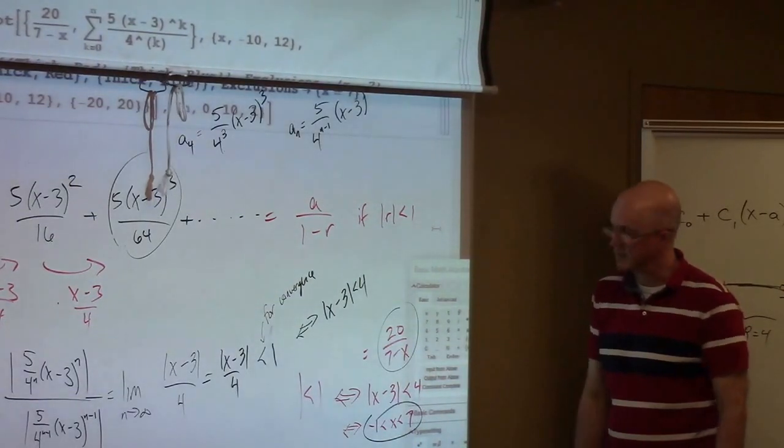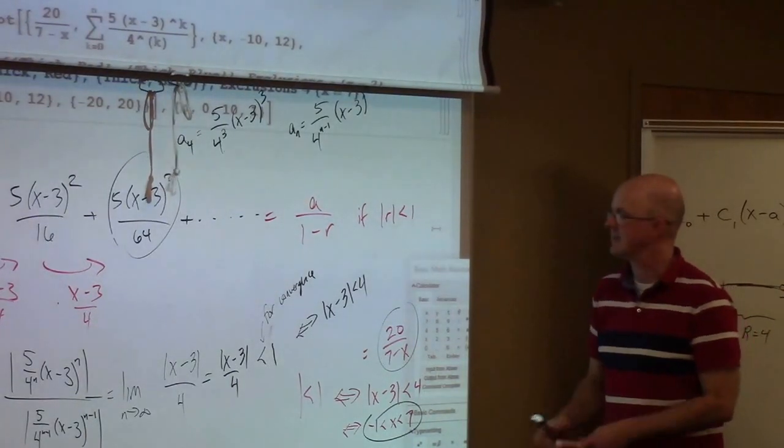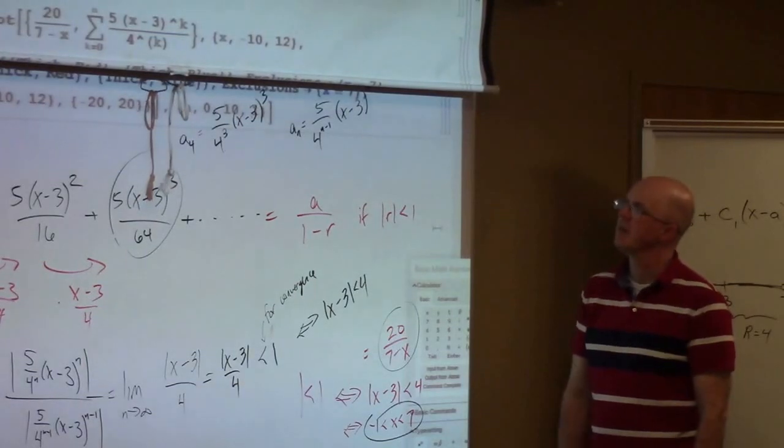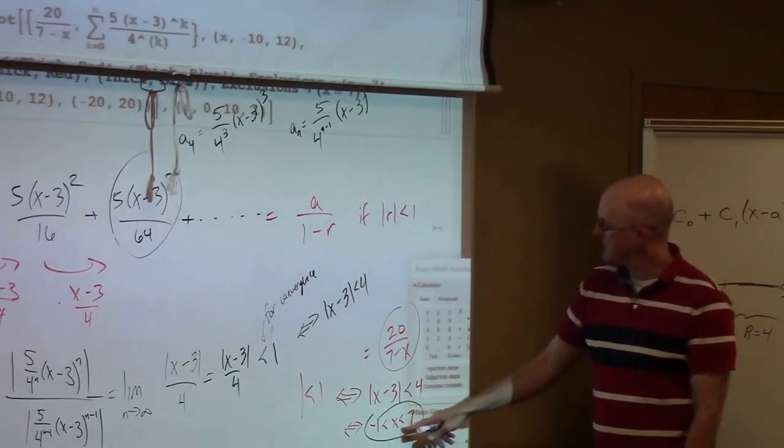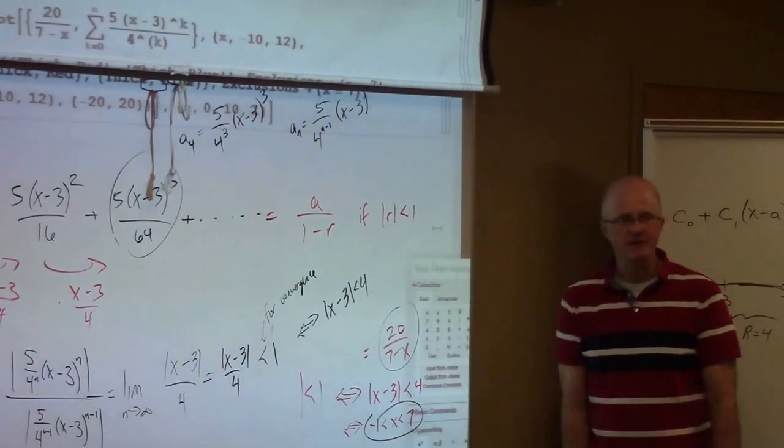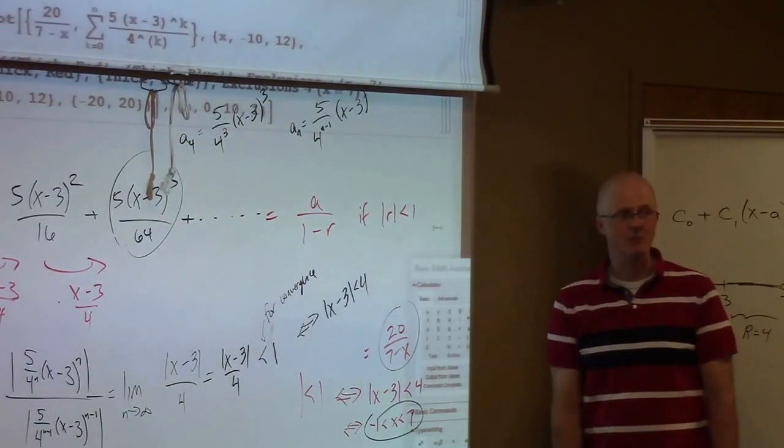That's a function of x, and so we can make a graph, and we saw graphically that these things do match up exactly when x is strictly between negative 1 and 7 if you think about the infinite sum, and approximately with these partial sums.